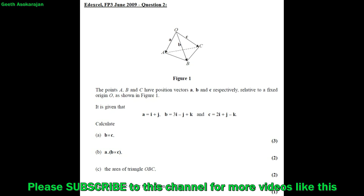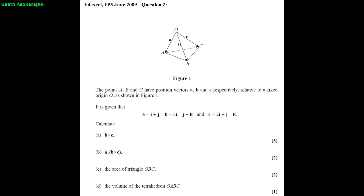The points A, B and C have position vectors A, B and C respectively, relative to a fixed origin O, as shown in figure 1. It is given that vector A is i plus j, vector B is 3i minus j plus k, and vector C is 2i plus j minus k.